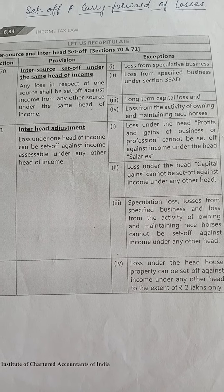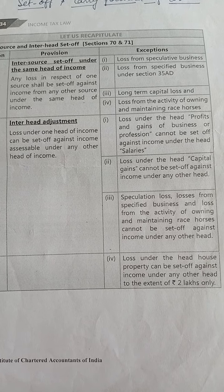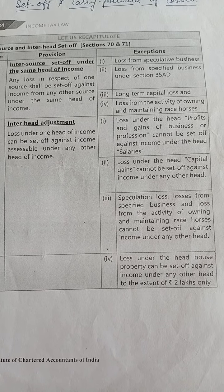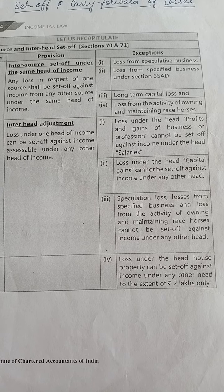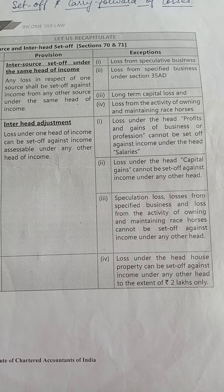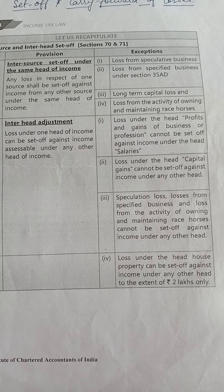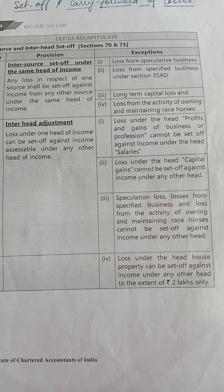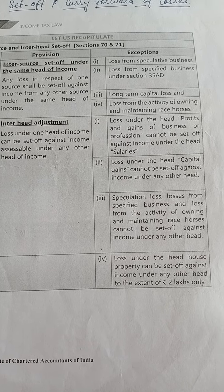But there are some exceptions you need to keep in mind. First exception: if there is some loss from a speculative business, that will be set off against the income from speculative business only. It cannot be set off against non-speculative business income.